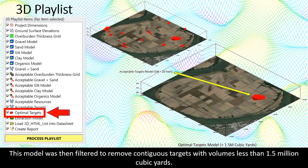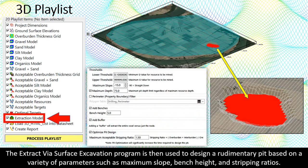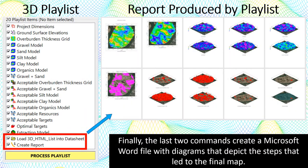This model is then multiplied by the acceptable overburden model to additionally constrain the output. This model is then filtered to remove contiguous targets with volumes less than 1.5 million cubic yards. The extract via surface excavation program is then used to design a rudimentary pit based on a variety of parameters such as maximum slope, bench height, and stripping ratios. Finally, the last two commands create a Microsoft Word file with diagrams that depict the steps that led to the final map.